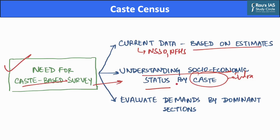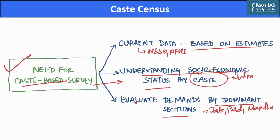Over the last decade, some of the largest mobilizations based on caste were by dominant sections such as Jats, Patels and Marathas demanding reservations. However, these demands were not based on scientific evidence about their size or relative level of deprivation. Hence, a caste-based survey will provide data to help the government evaluate such demands based on scientific evidence and help vulnerable sections legitimize their demands for reservation policies.